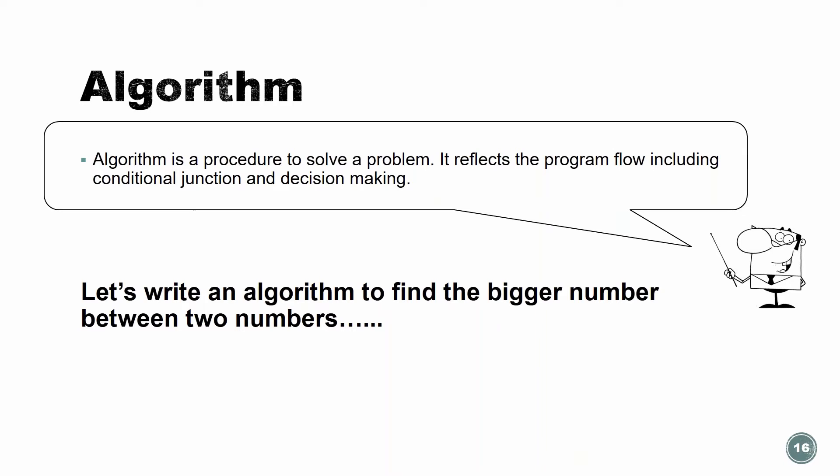In other words, when we have a problem that we need to write and we need to define what will be the steps, we need to tell the compiler what are the steps the program needs to do in order to do whatever we want to do. That's the algorithm. So let's do it together. Let's write an algorithm to find the bigger number between two numbers.